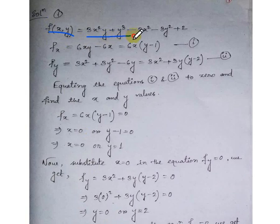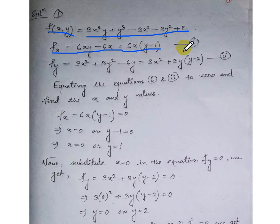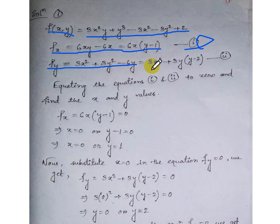For the solution, we take the partial derivative fx = 6xy - 6x, which equals 6x(y - 1). This is our first equation. Then we have fy = 3x² + 3y² - 6y, which we can factor as 3(x² + 3y(y - 2)). This is equation number 2.